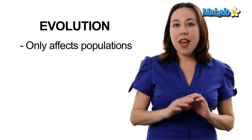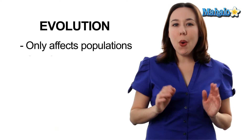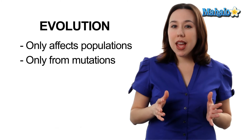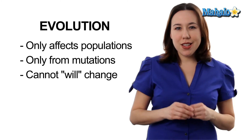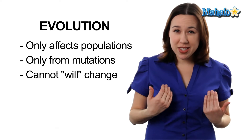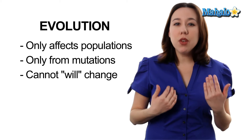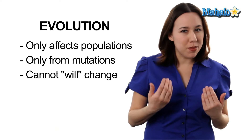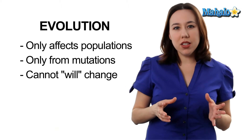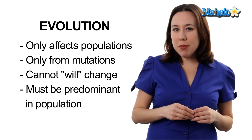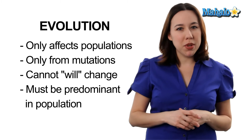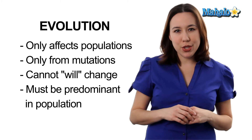It's important to note a few things about evolution though. Evolution can only happen on a population, and evolution happens from random mutations. There is no organism — even including our cells — that can will their cells to change their DNA and will themselves to evolve. Also keep in mind that if a mutation is not predominant in a population, then it's not considered evolution.